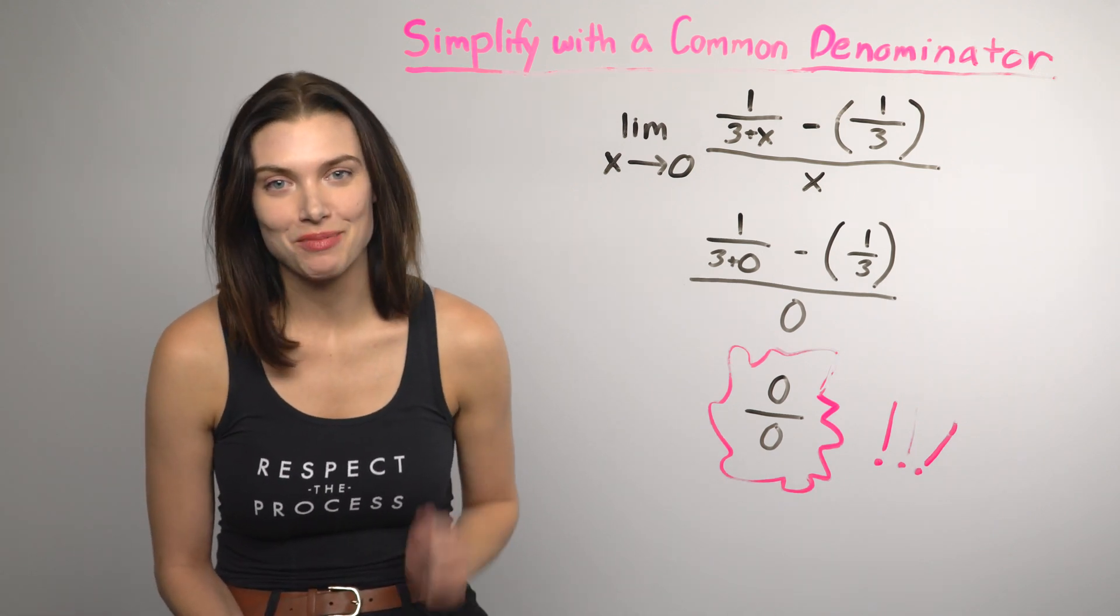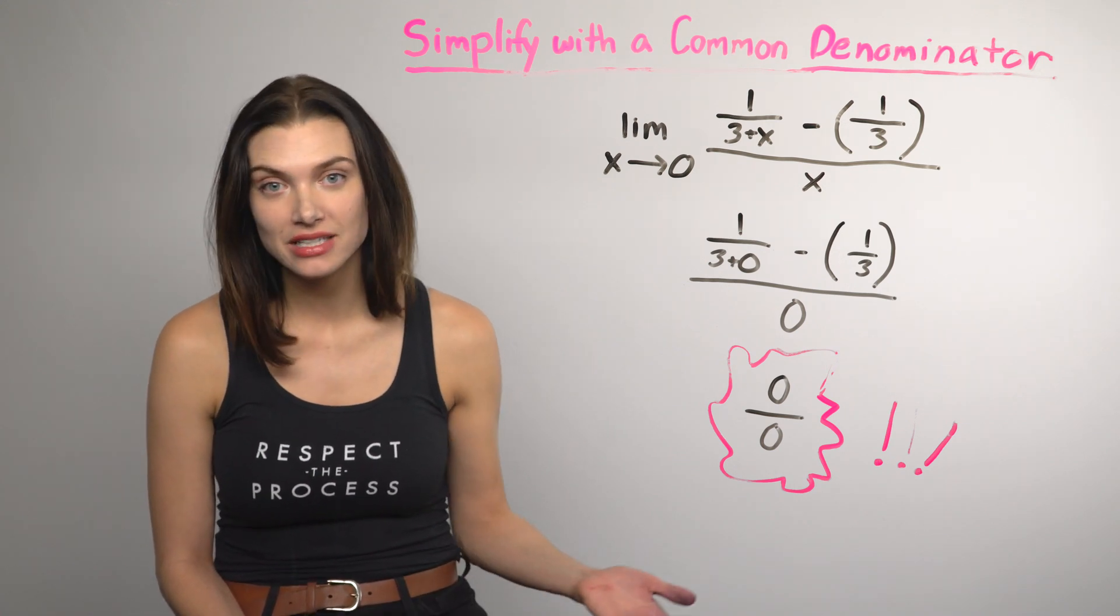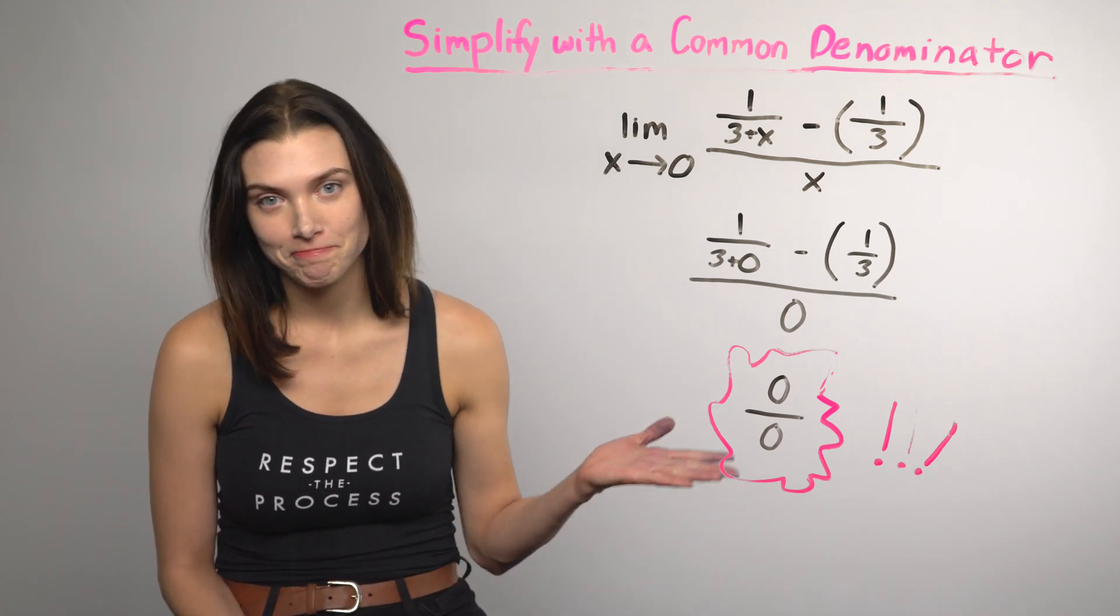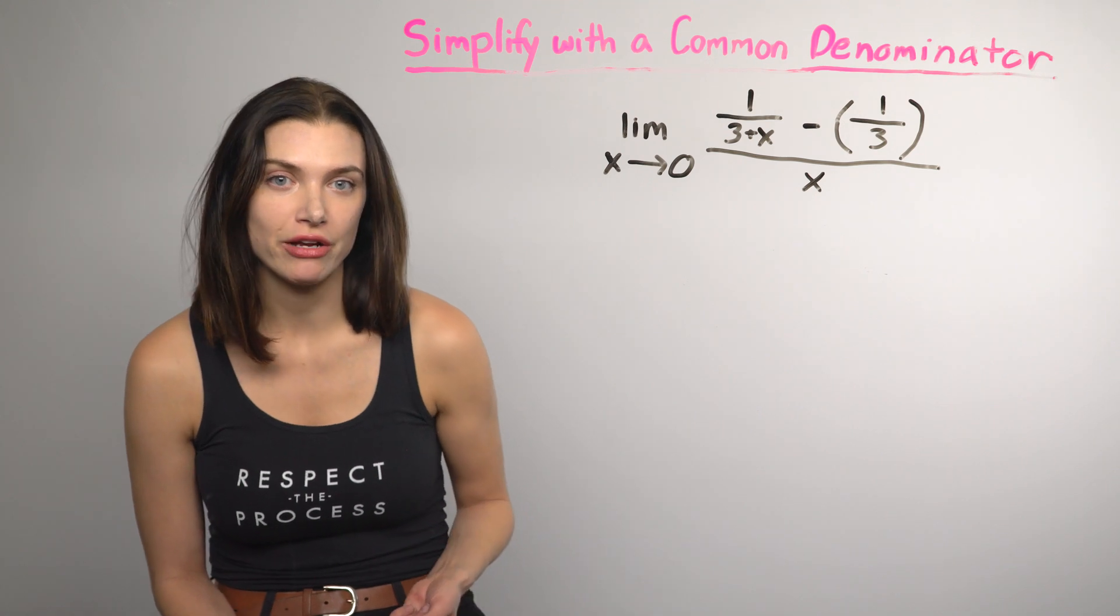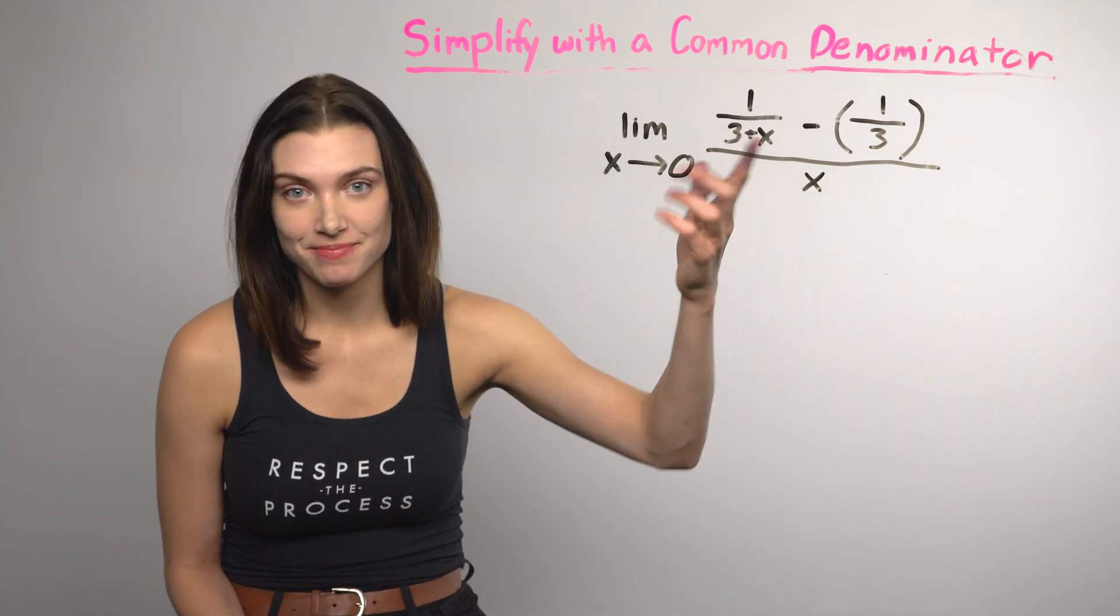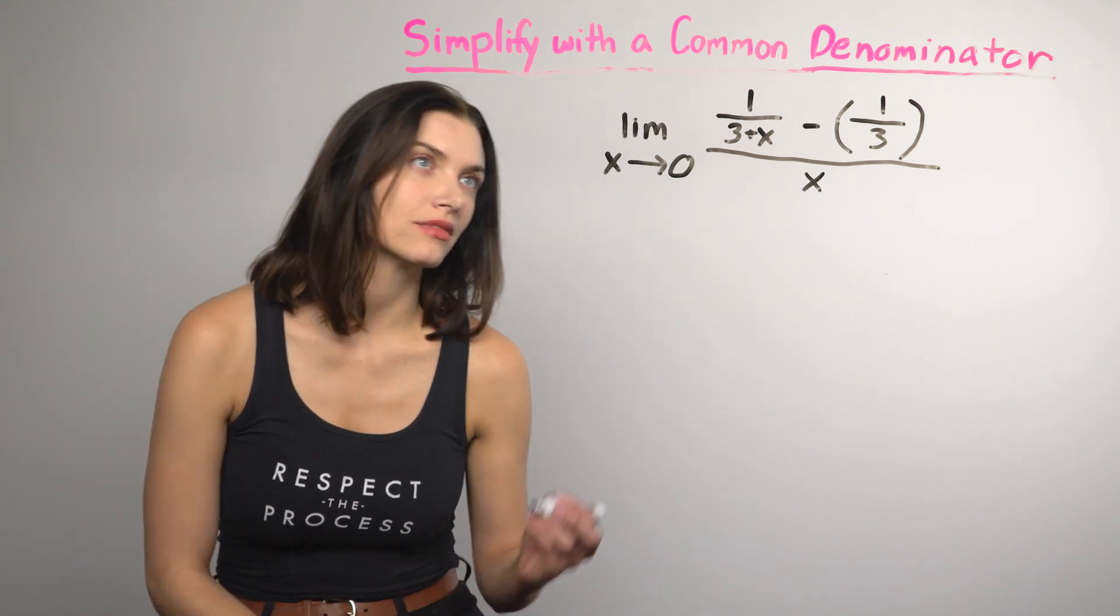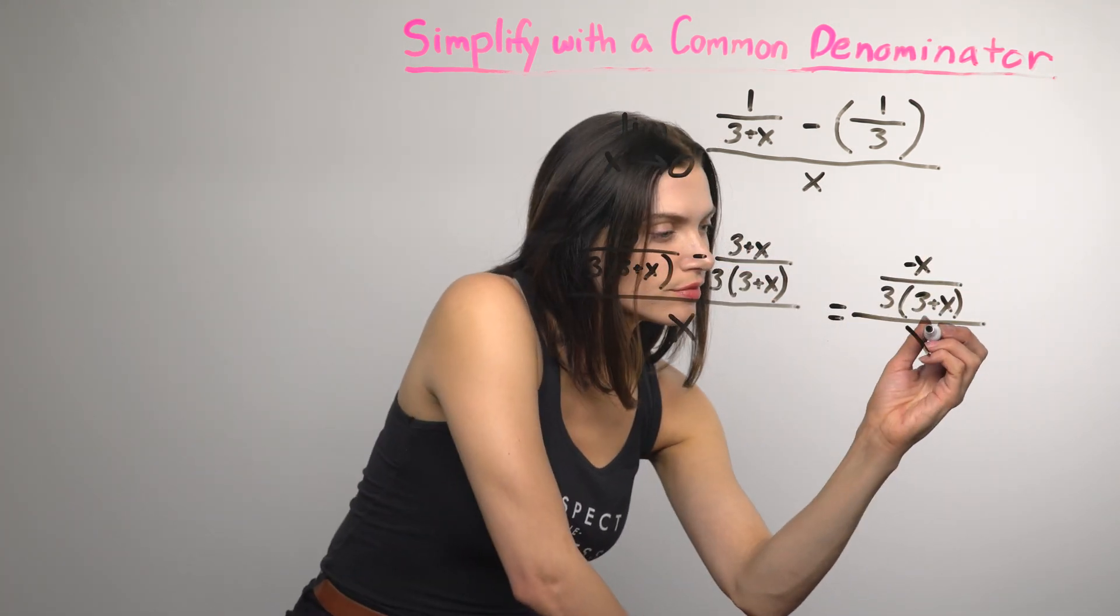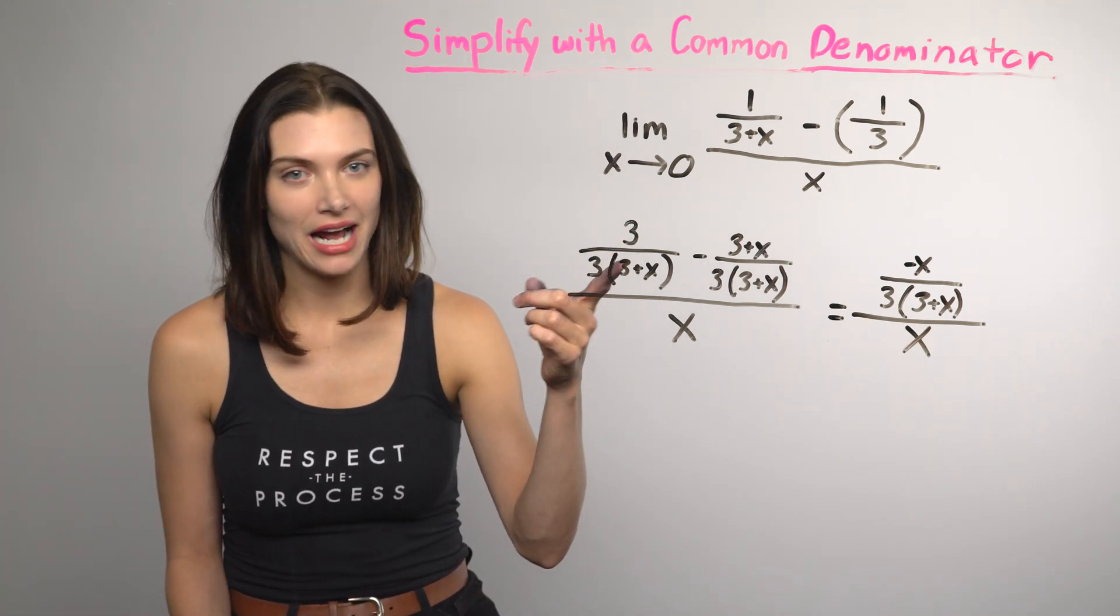This is the last way, I promise. Again, here's one where direct substitution gives us 0 over 0. I keep pointing this out because you should always try direct substitution first. But of course, it didn't work. Dealing with a complex fraction isn't bad if you can find a common denominator. In the numerator, the common denominator is going to just be both pieces combined. So 3 times 3 plus x. By changing the fractions in the numerator to have a common denominator, you can combine them. So I fixed the top by creating a common denominator and combining.